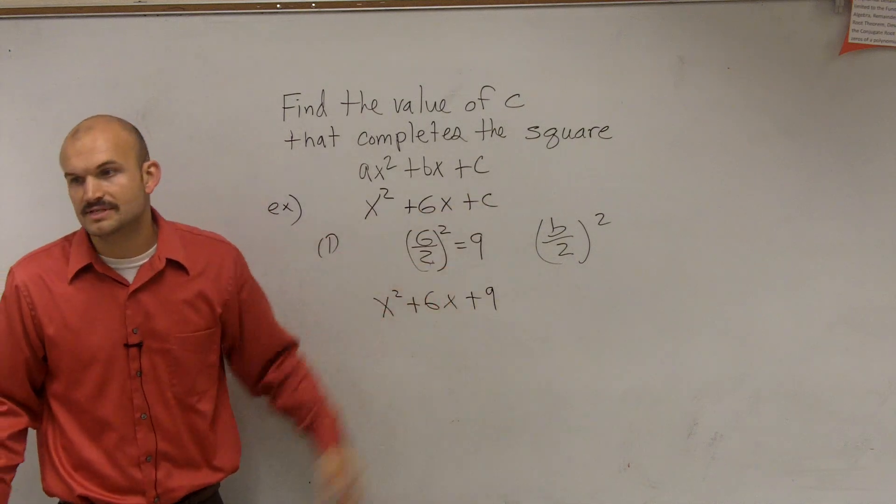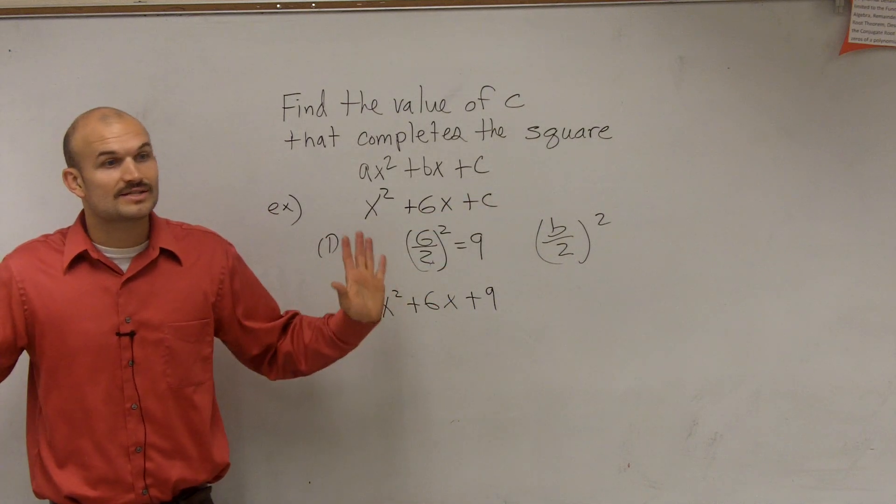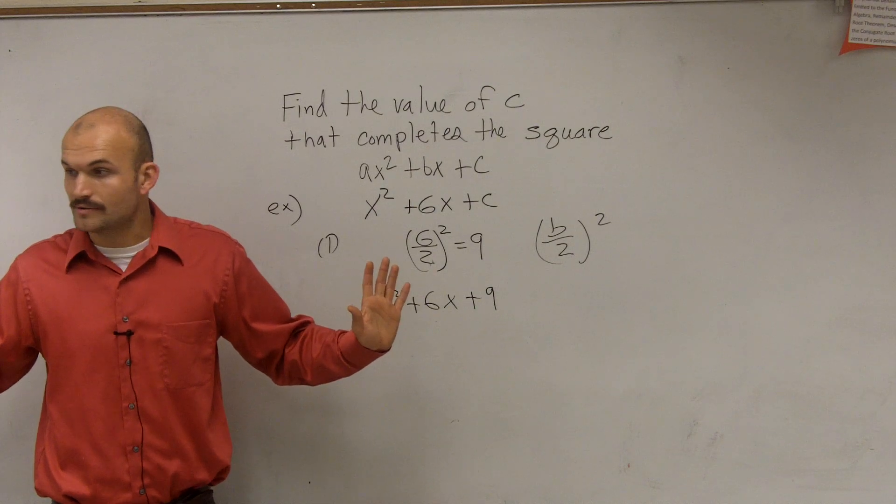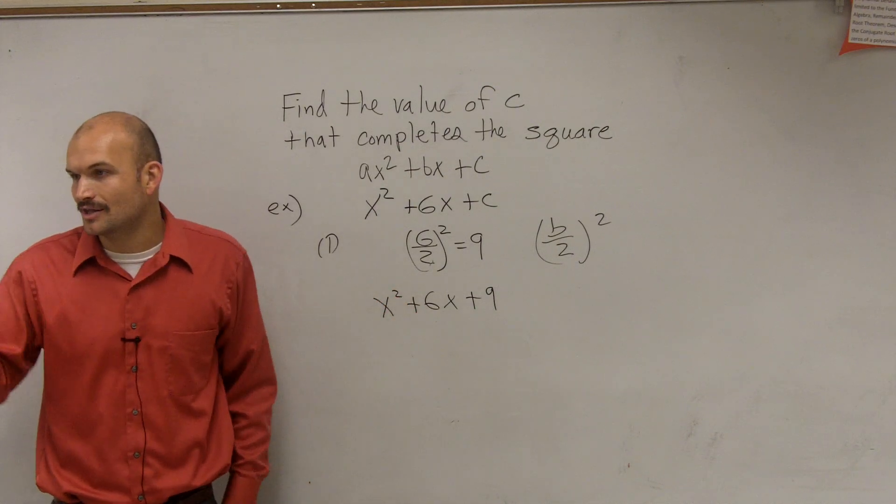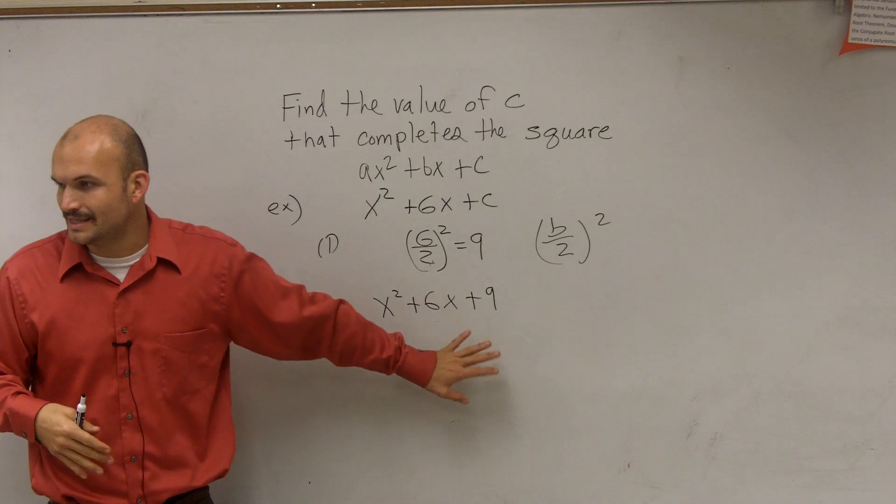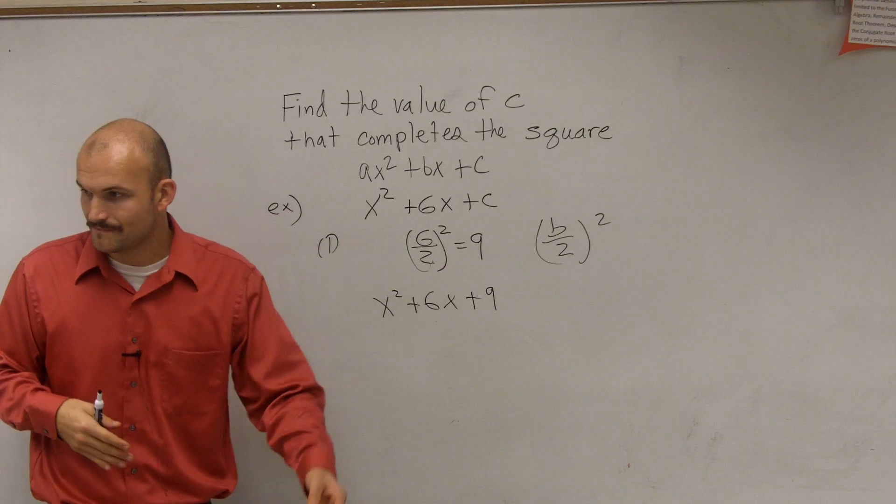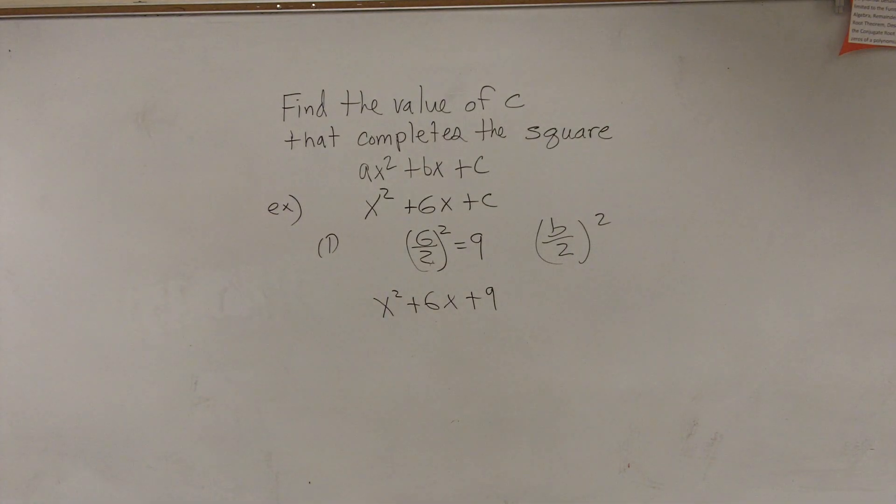So 9 is the value of c that completes my square. That's all we've got to do to start. That's all I've got to do. Just do that. I'll explain why we need to find that value in a second, OK? Just do that for your video or for your work.